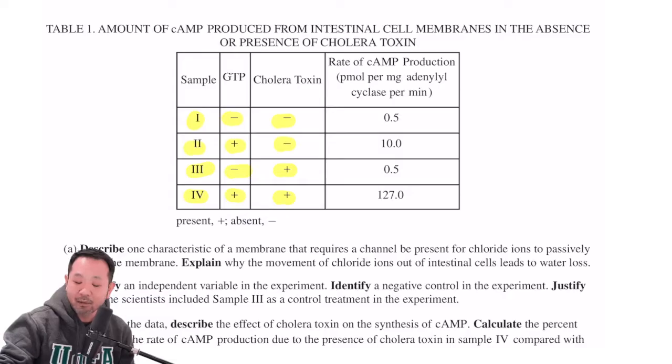The dependent variable that we're trying to measure here is, of course, over on the right side, the rate of cyclic AMP production, which you see as being extremely high where there is cholera toxin as well as GTP. And of course, if you don't have GTP, then it's going to be relatively low.